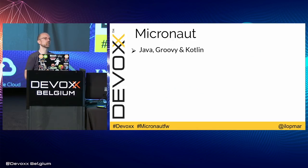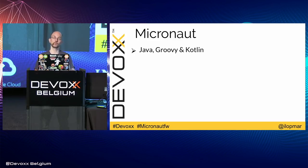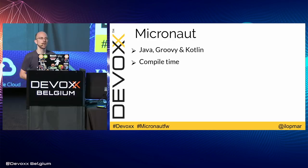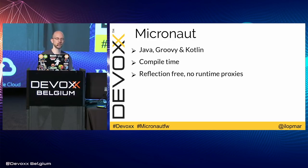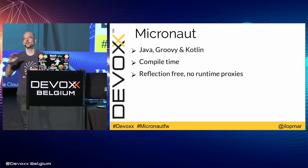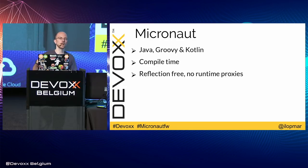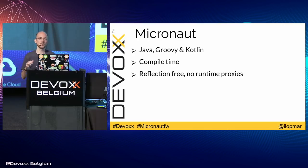Micronaut is a new JVM framework that allows you to develop microservices applications with Java, Groovy, and Kotlin. Everything in Micronaut is done at compilation time, so you don't need to worry about runtime proxies or runtime reflection. The framework is reflection-free and there are no runtime proxies. When you start your application, you don't need to load all meta-information about your classes, beans, and artifacts, because everything is already generated at compilation time.